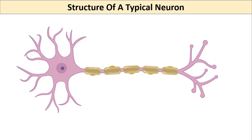The function of neurons in the nervous system is to conduct signals. They start with receiving the signal, then propagating it along distances, and finally passing it to the target cells. Beautifully, the structure of a typical neuron is designed exactly to perform these tasks.